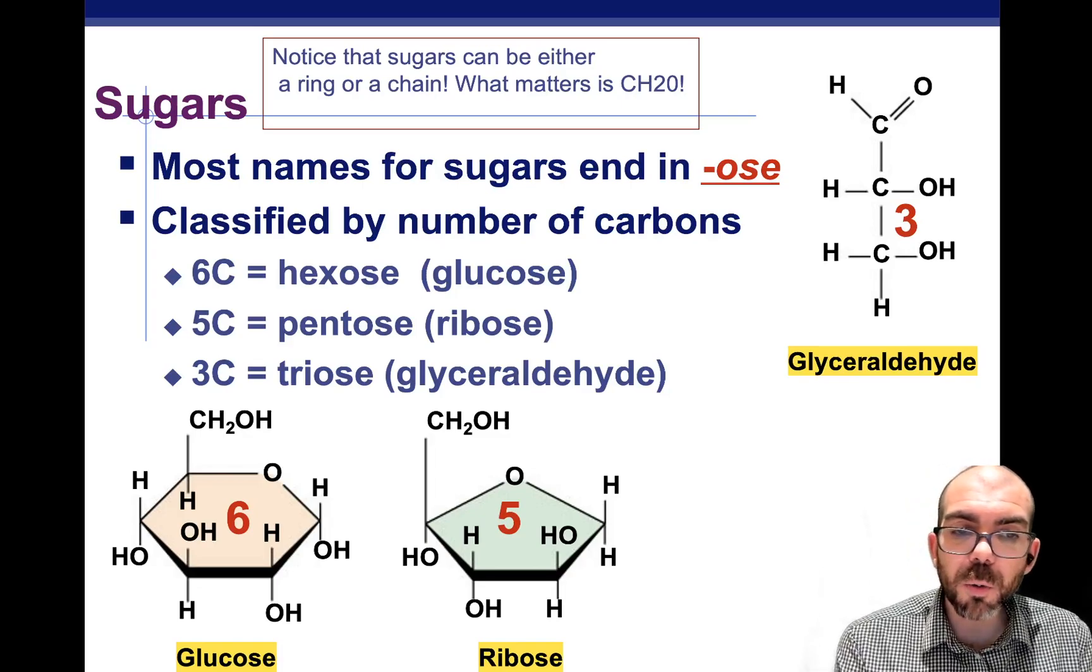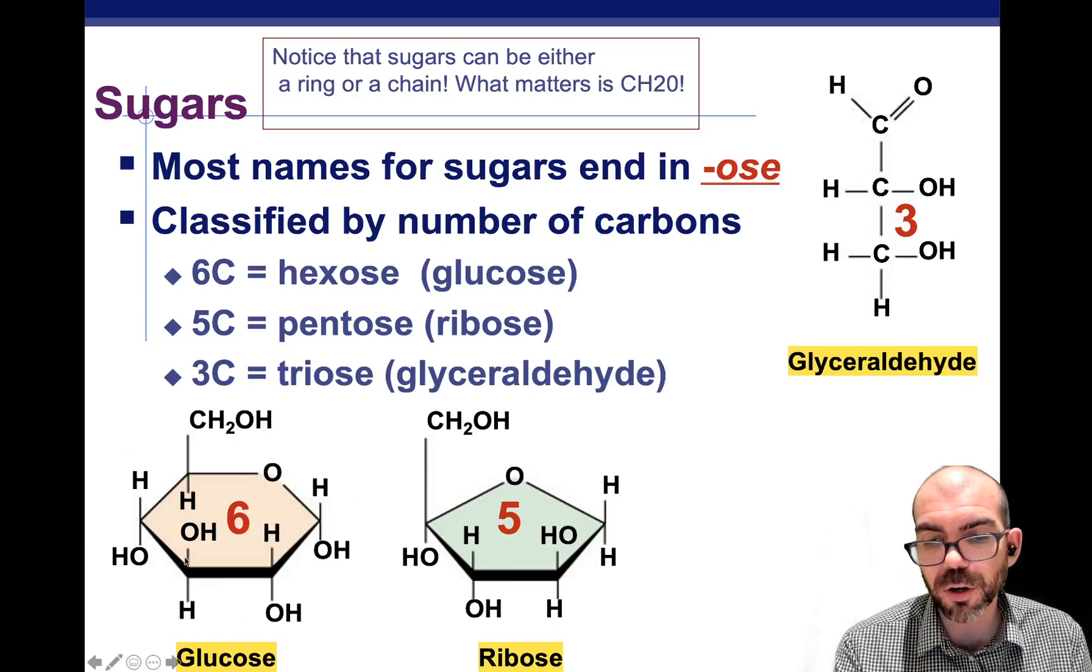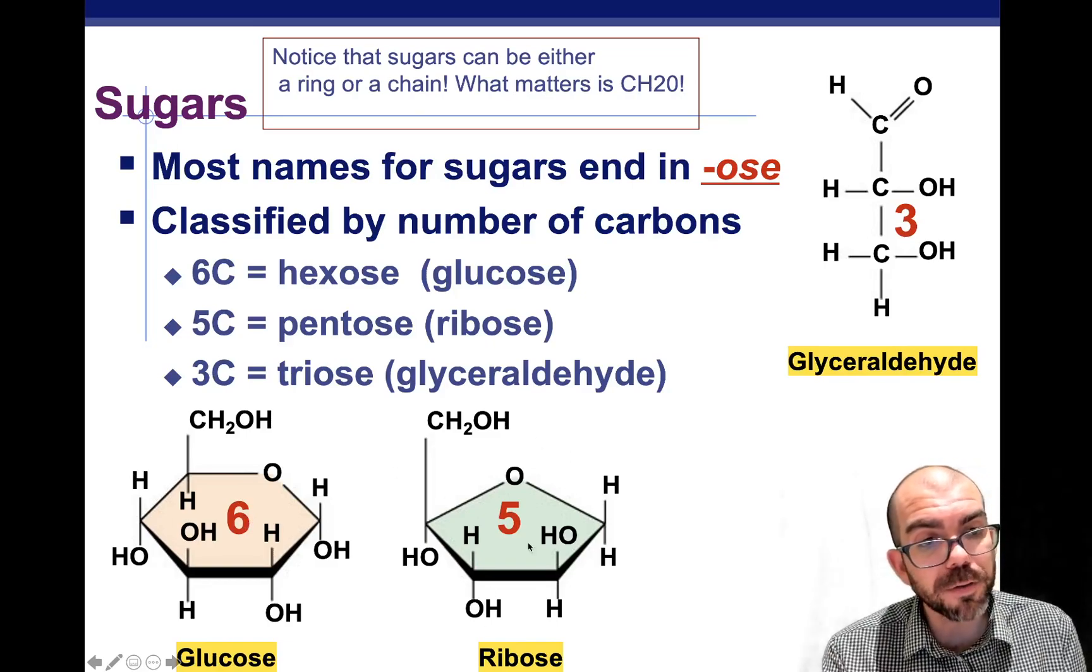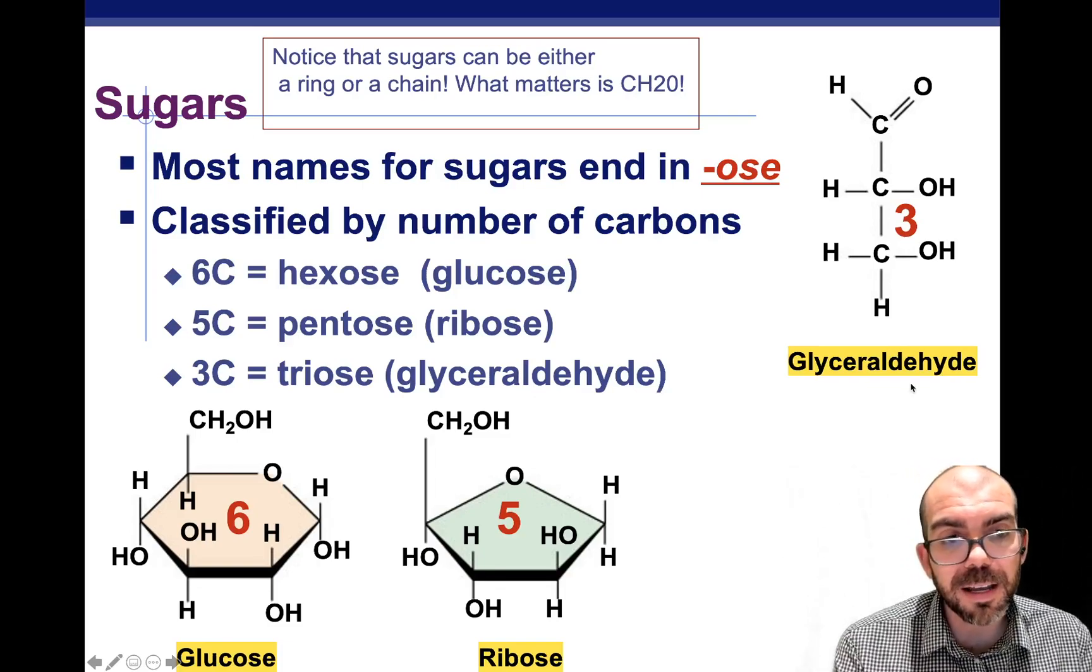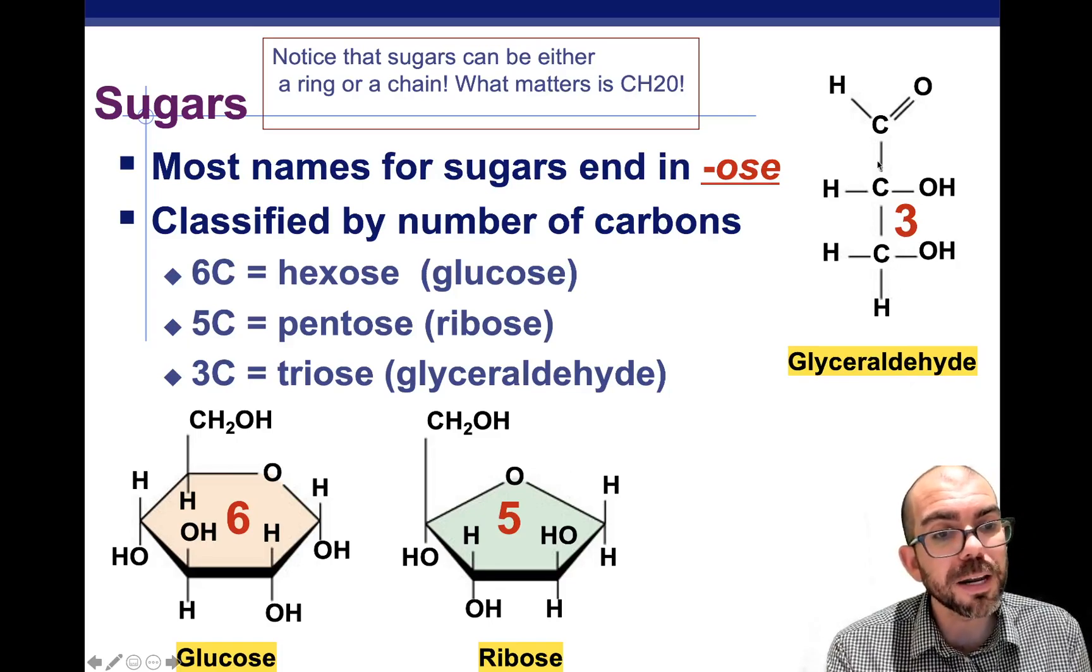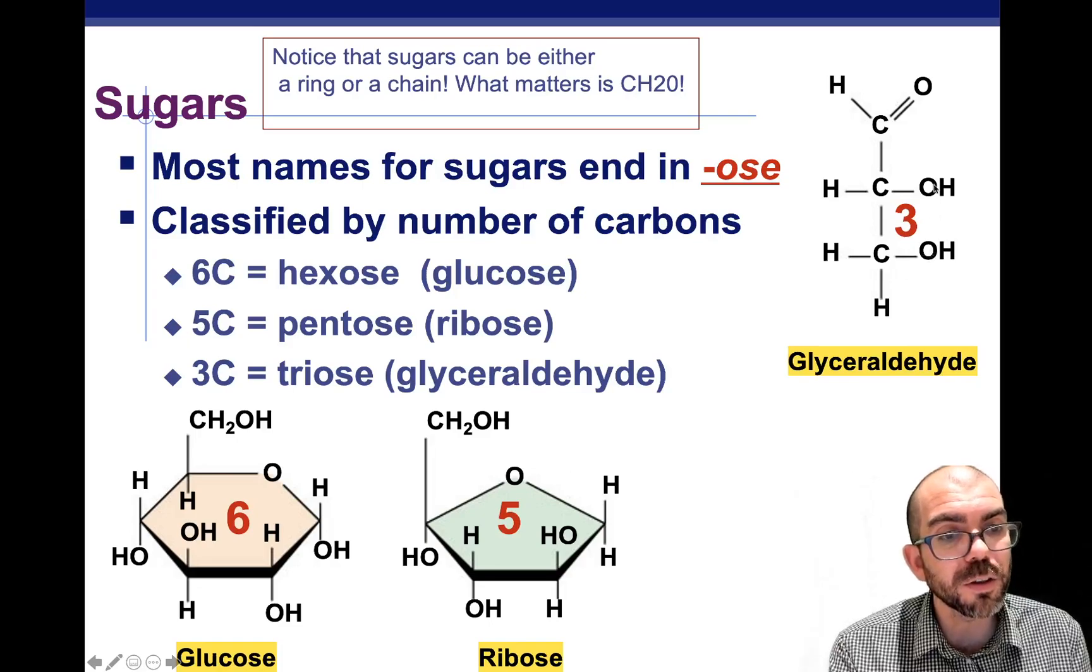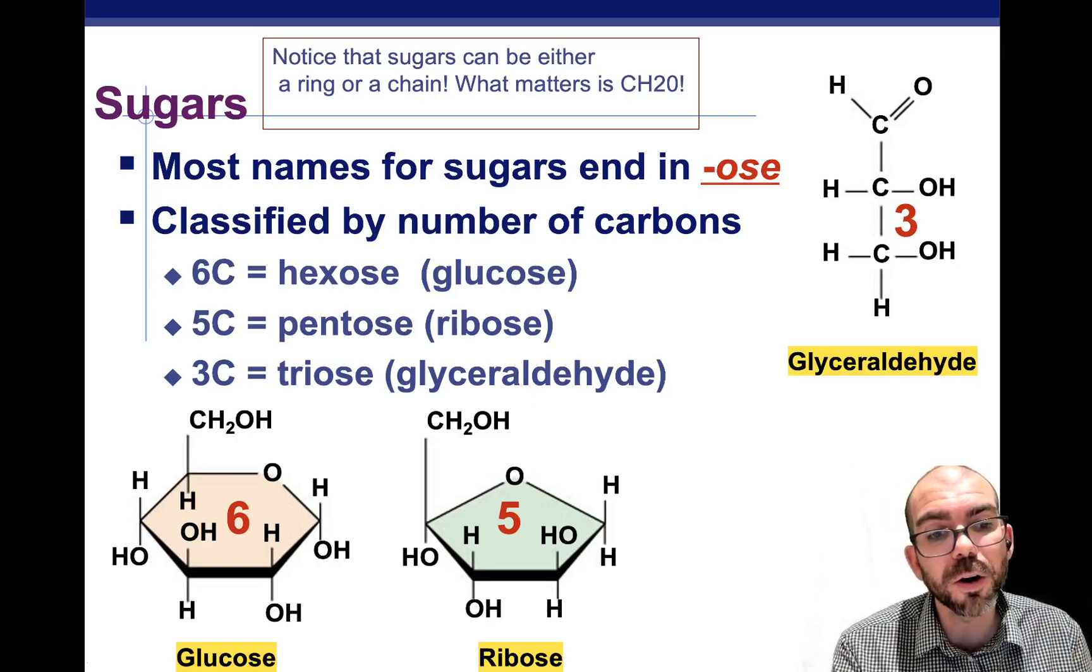Sugars almost always end in the name -ose. And most of the time, they come in carbon rings. Here you can see the six-carbon sugar glucose and the five-carbon sugar ribose. However, there are instances of carbohydrates in chains. The way you can identify it is by looking at the atoms that make it up and how many carbons, hydrogens, and oxygens there are. Here I have three carbons, three oxygens, and six hydrogens. So it's still following that CH2O formula.